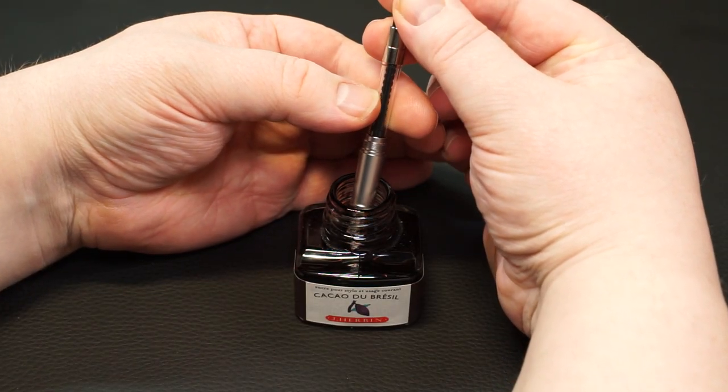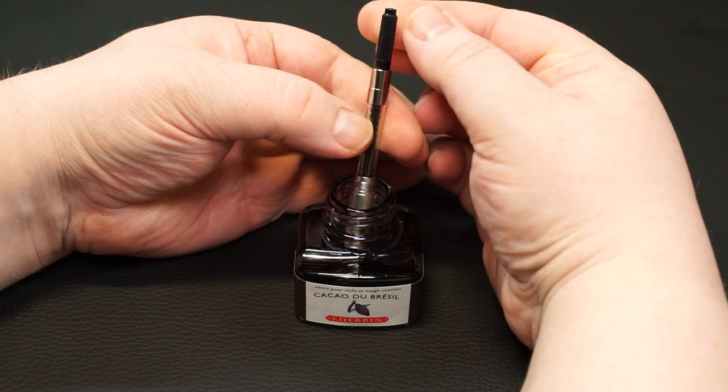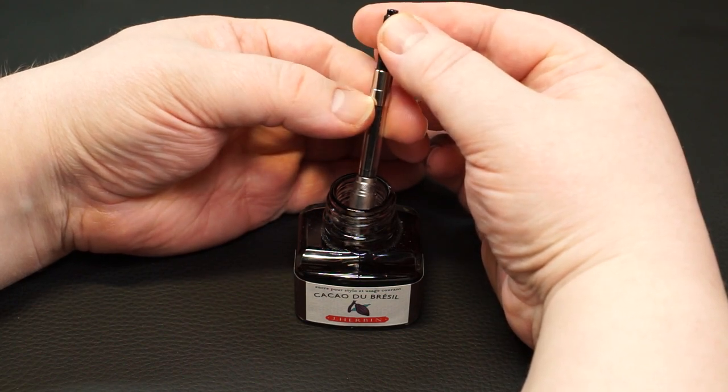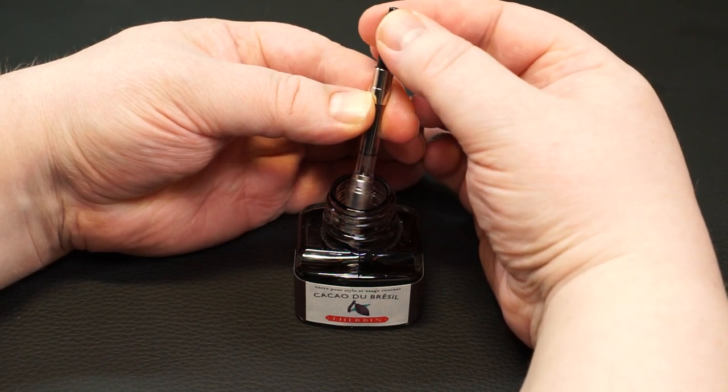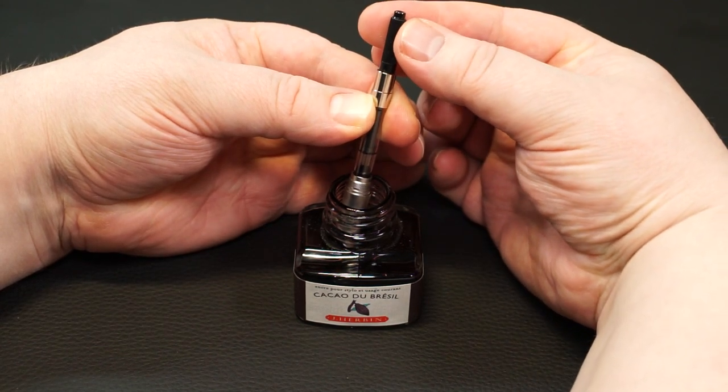Hold the fountain pen with one hand. Be careful not to touch the edge of the inkwell, as this is where ink is usually found. With the other hand, turn the knob of the converter until ink is drawn up.